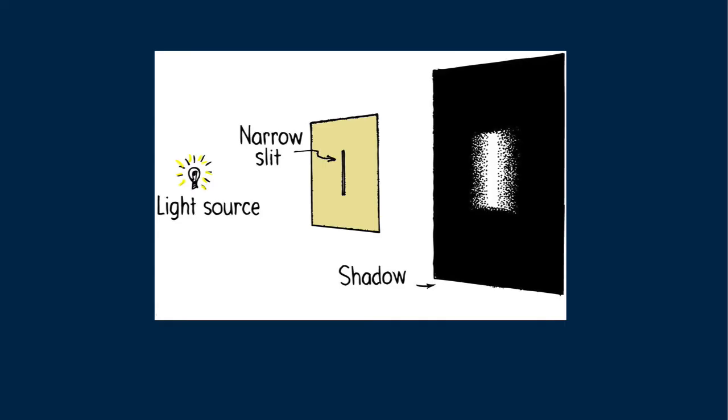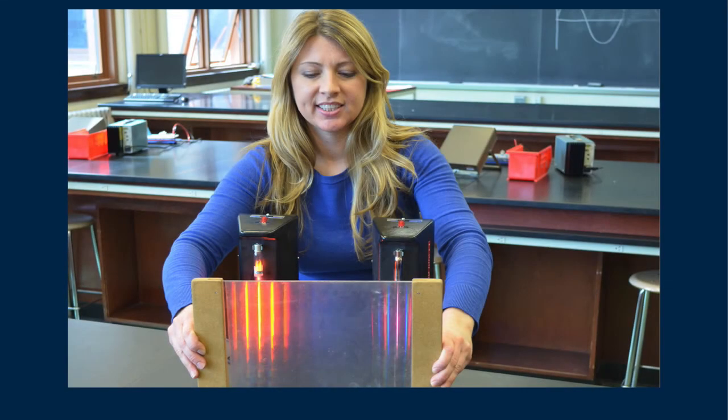Light diffracting through a single slit is one thing. Light diffracting through hundreds of closely spaced slits is another. Such an array of slits makes up a diffraction grating. Here's Jill Johnson of City College of San Francisco with an oversized diffraction grating used for classroom demonstrations.